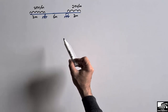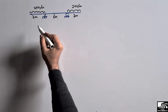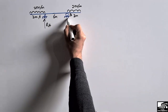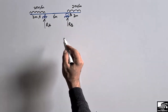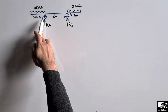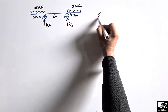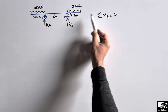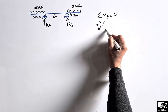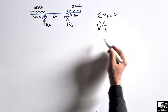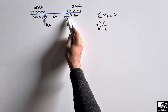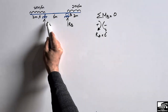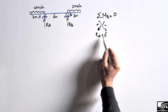First we have to find out the support reactions, then we can draw the shear force and bending moment diagram. Let's consider this is support A and this is support B, and the reactions are RA and RB. Since there is no horizontal load, we don't consider any horizontal reactions. To find the support reactions, let's take the summation of moments at point B equal to zero. Clockwise moment is taken as positive and anticlockwise as negative. RA will create a clockwise moment about point B, so RA multiplied by its moment arm of 6 meters.